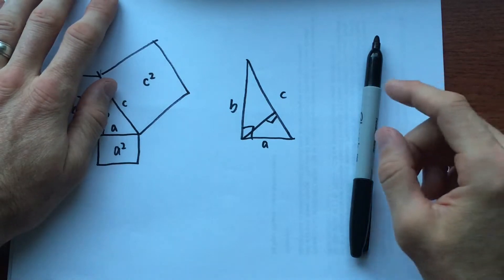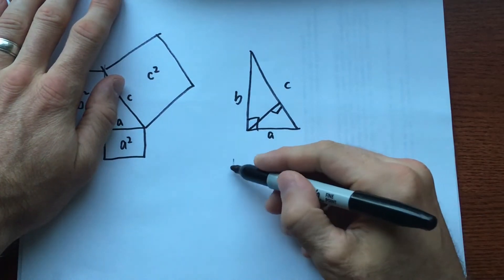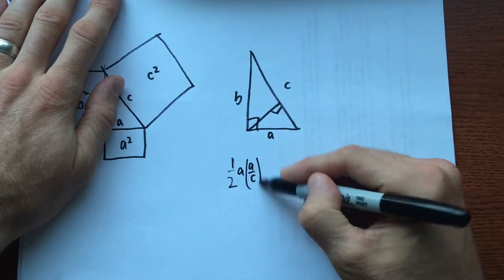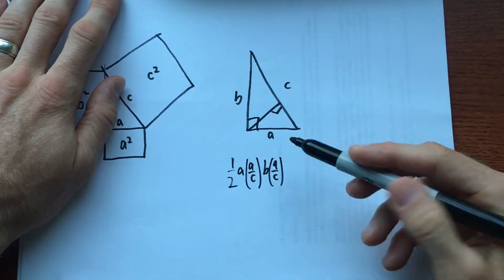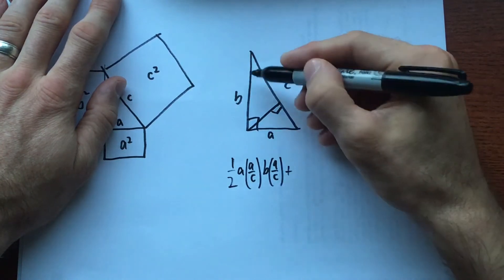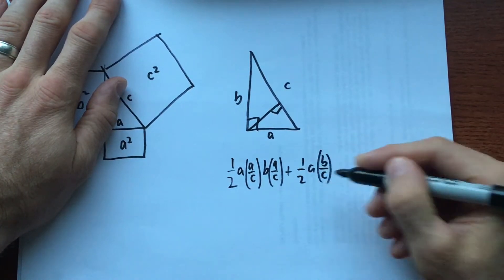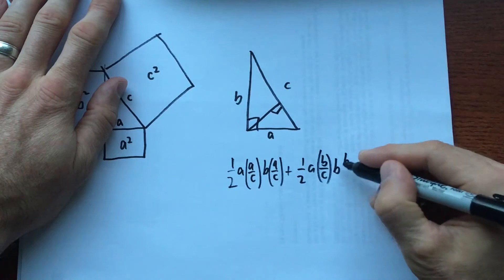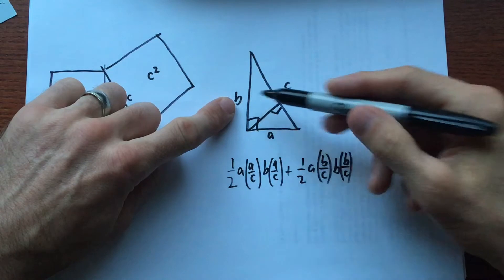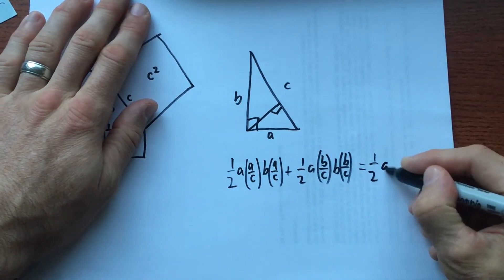And if you really want to see the details in that proof, the area of the small triangle is one-half a times a over c times b times a over c. The proportionality constant for the small triangle is a over c. For the medium triangle is one-half a, b over c is the scale factor times b, b over c. b over c is the scale factor, because b is the hypotenuse of the medium triangle. And the area of the total triangle is one-half a b.